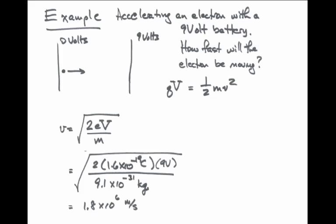And in fact, in our calculator, the final answer comes up to about 1.8 times 10 to the 6th meters per second. So it's a very fast-moving electron. If you remember that the speed of light is approximately 3 times 10 to the 8 meters per second, this is about 1% of the speed of light.